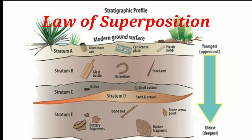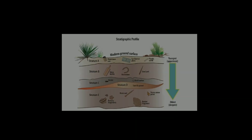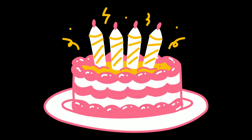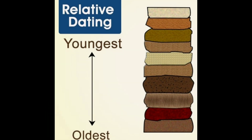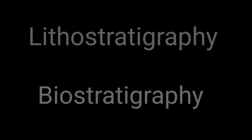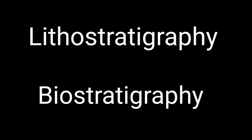Stratigraphy is based on the law of superposition: like a layer cake, the lowest layers must have been formed first, and upper strata were formed or deposited later than lower strata. Stratigraphy has two related subfields: lithostratigraphy and biostratigraphy.